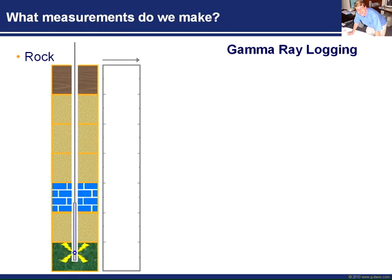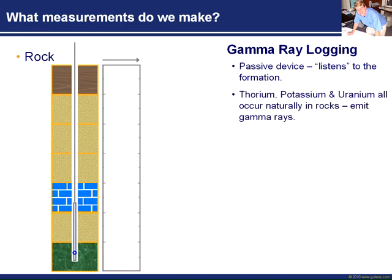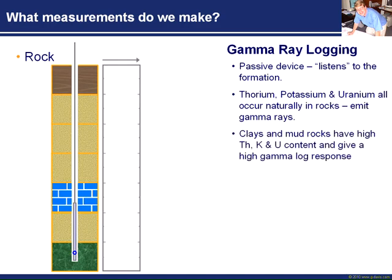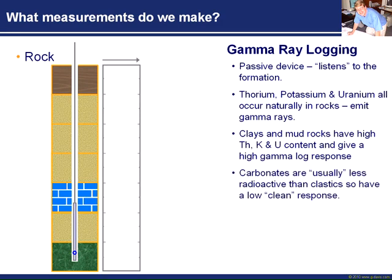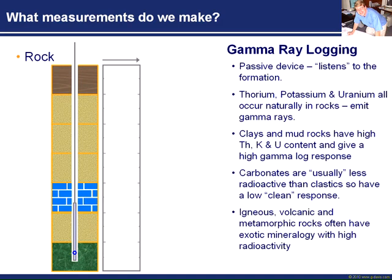This first type of measurement is one of the simplest we make just to determine rock type, and it's called gamma ray logging. A gamma ray is a passive device — that is, it listens to the formation. It doesn't do anything to the rock itself. It's just a measurement device we put down the hole, and it listens to the signals given off by the reservoir. Now, rocks contain naturally occurring radioactive elements: thorium, potassium, and uranium, and they all emit gamma rays. So all around us, rocks are emitting these gamma rays, and if you listen for them and measure them, you can see them.